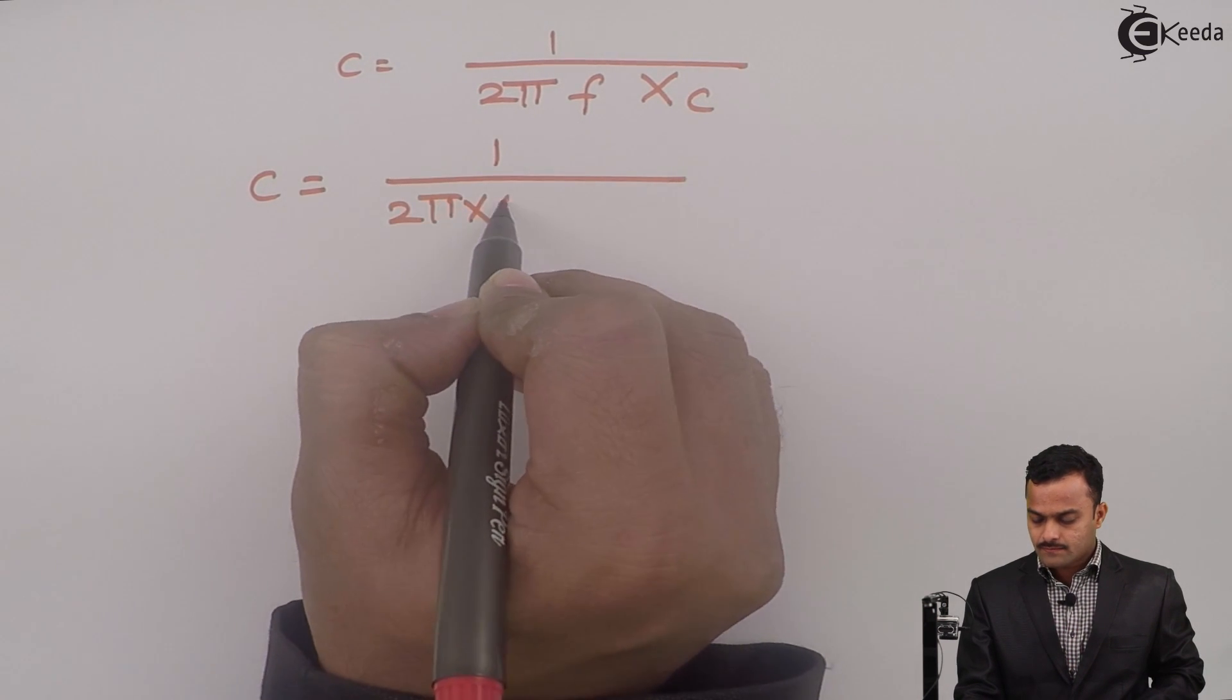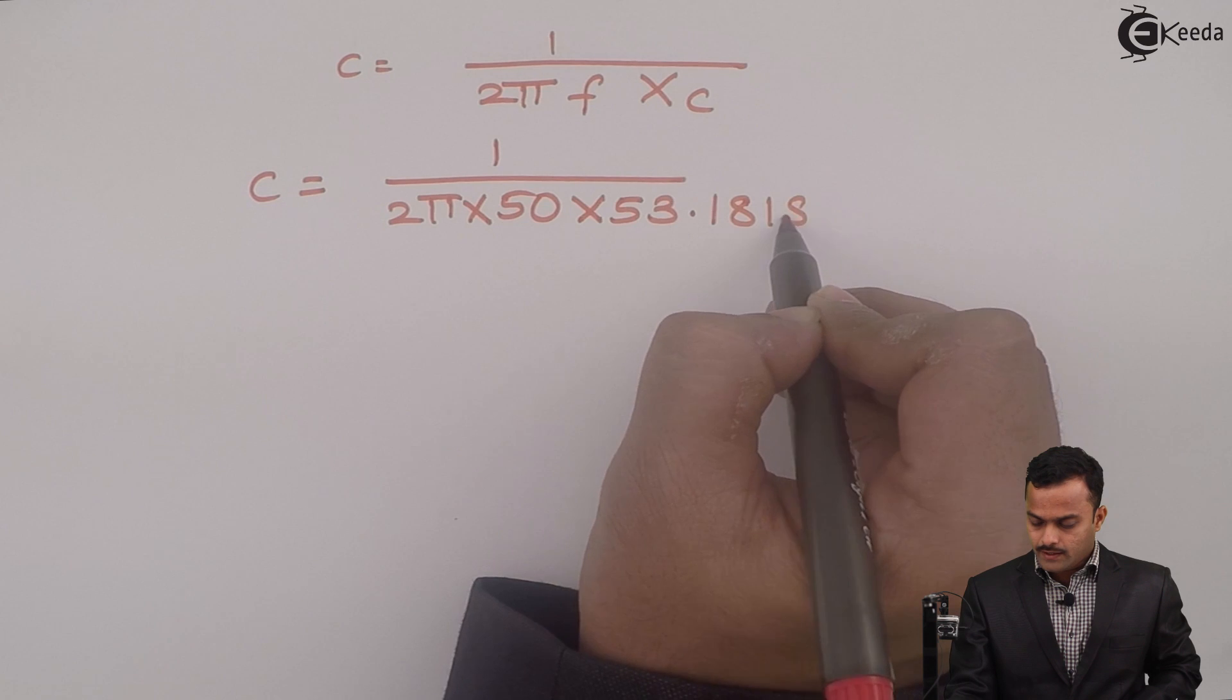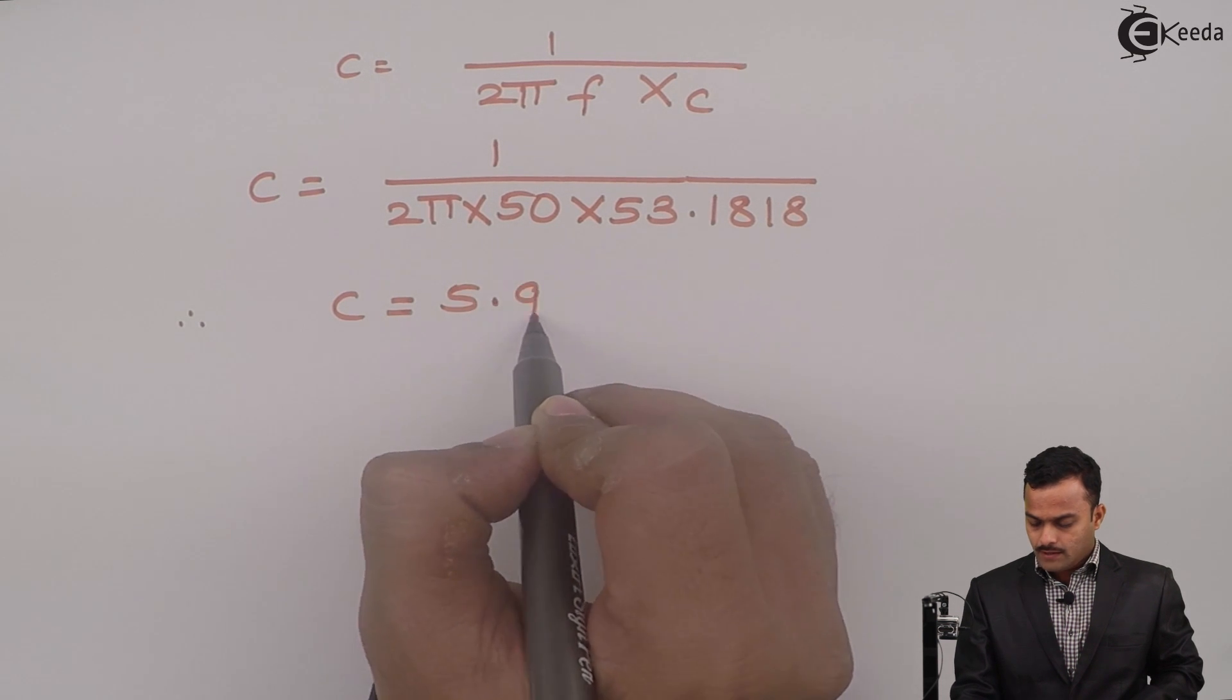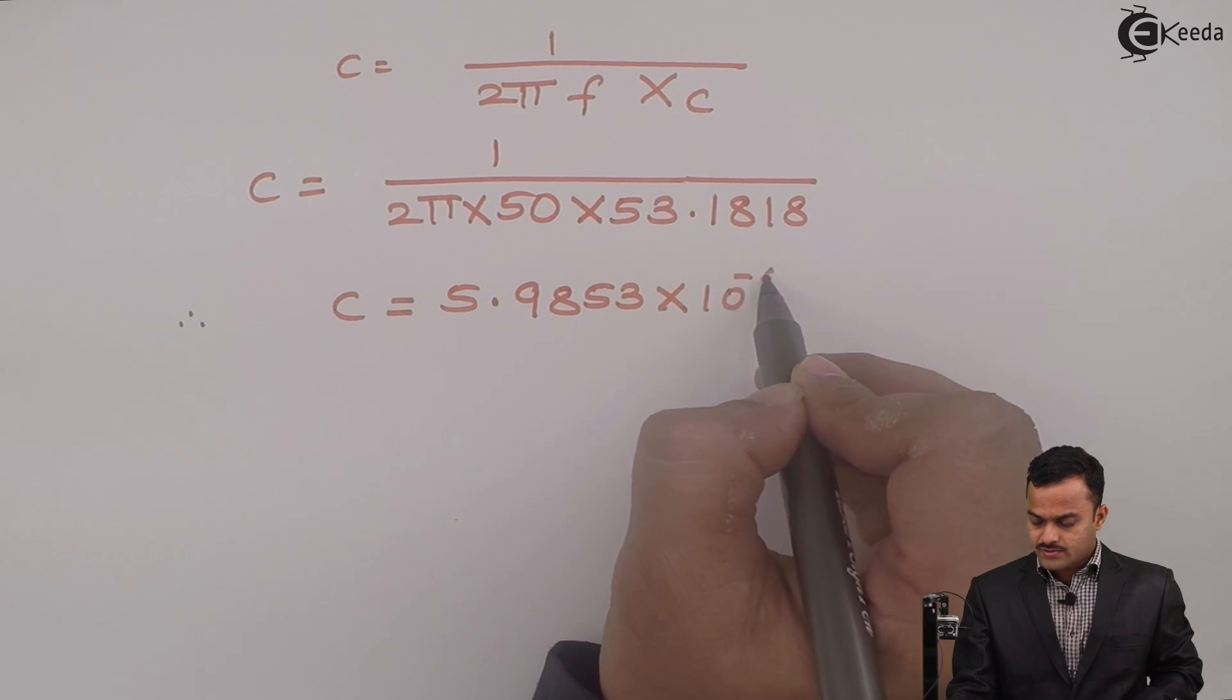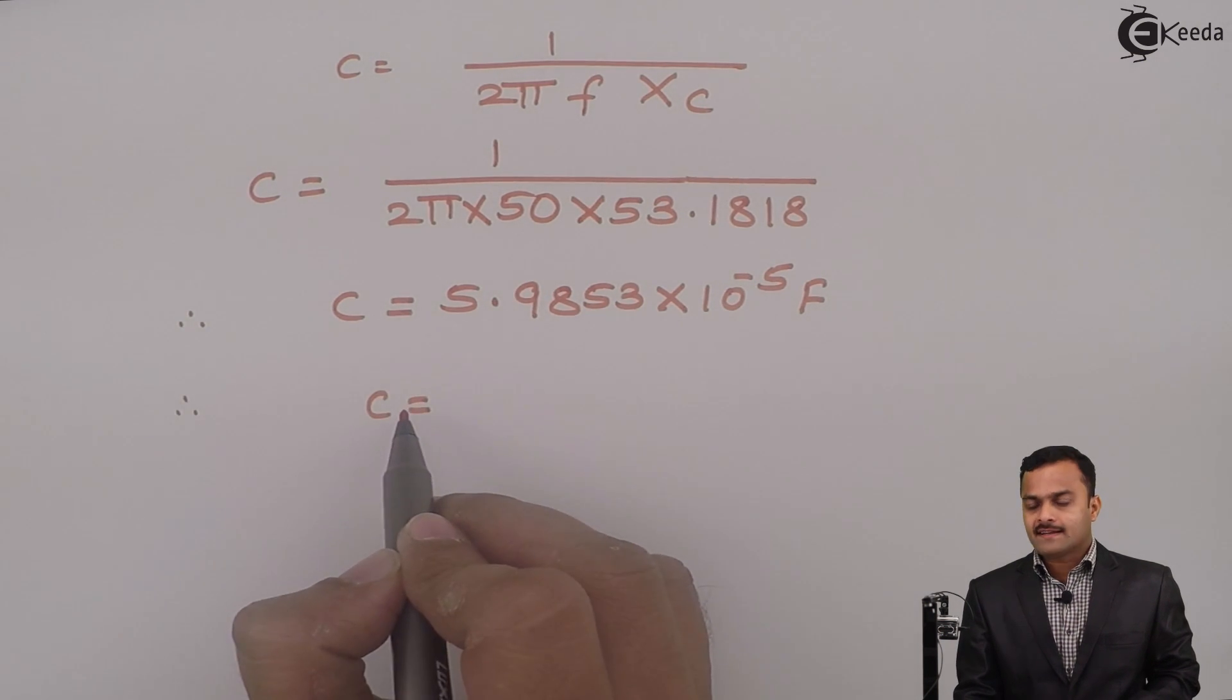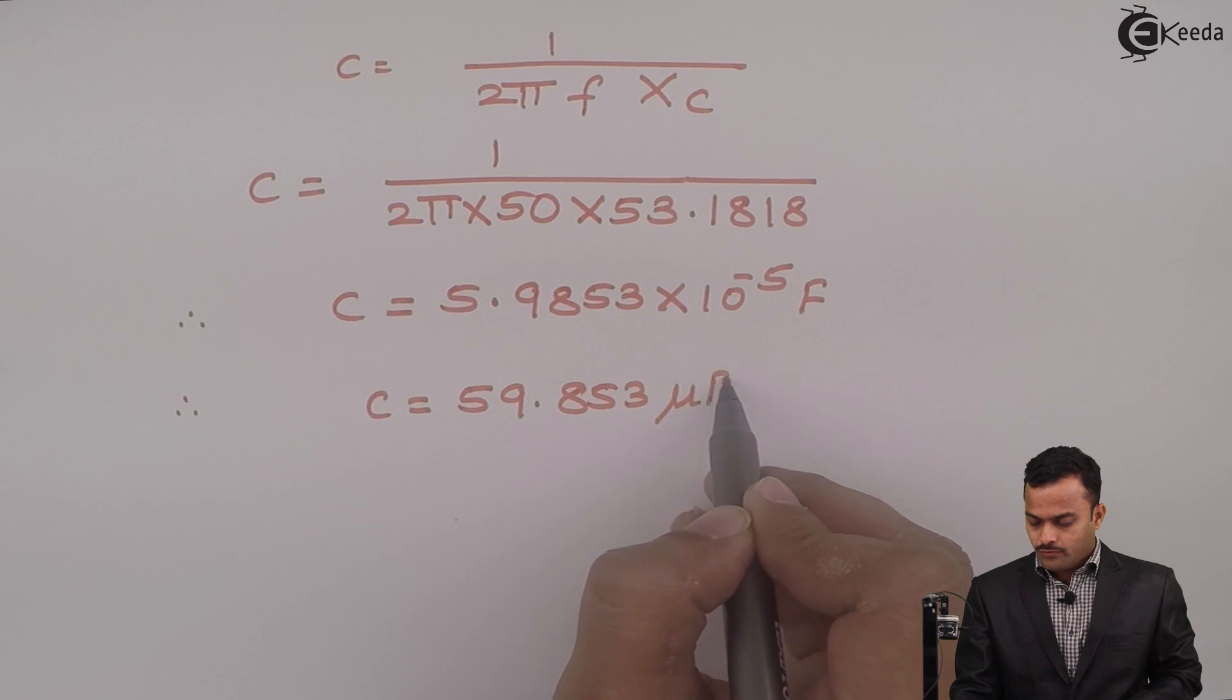F is 50 Hertz and XC we calculated as 53.1818. If we solve using the calculator, I will get C equal to 5.9853 multiplied by 10 raise to minus 5 farad. If I use a smaller unit, I can consider C as 59.853 microfarad, which is the required answer.